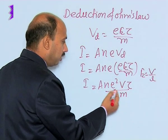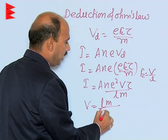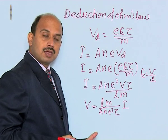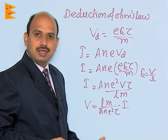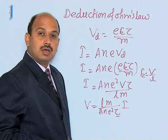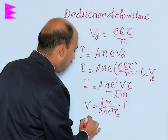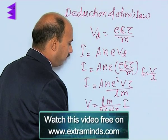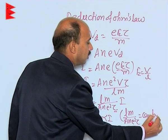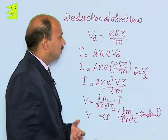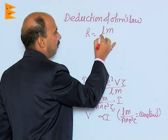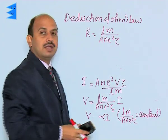Now we can get V is equal to Lm upon A n e squared τ, into I. As I have told you about Ohm's law, physical conditions remain constant like temperature, length, and area of cross section. So if L, area, and temperature remain constant then τ will also be constant. E and mass are already constant. So we can write V is proportional to I, when Lm upon A n e squared τ is constant, and this constant is itself known as resistance. So R is equal to Lm upon A n e squared τ. This is called the resistance of the conductor.